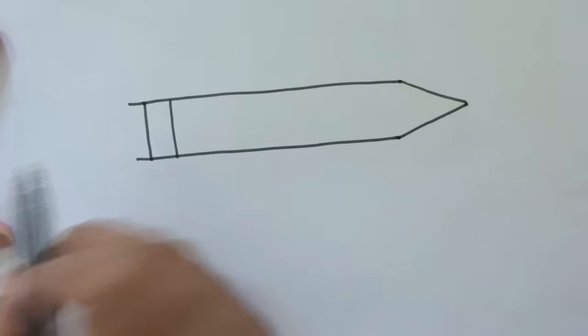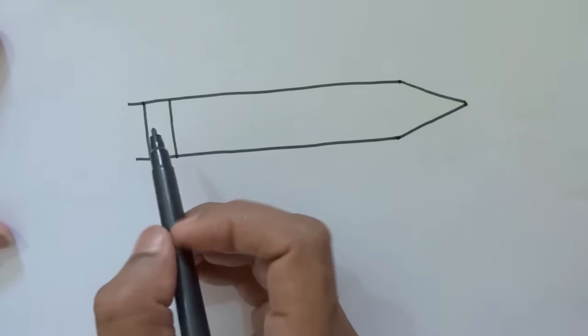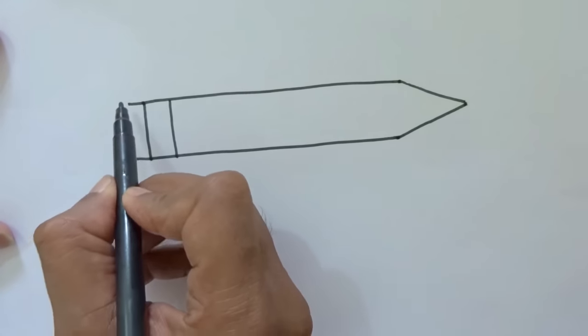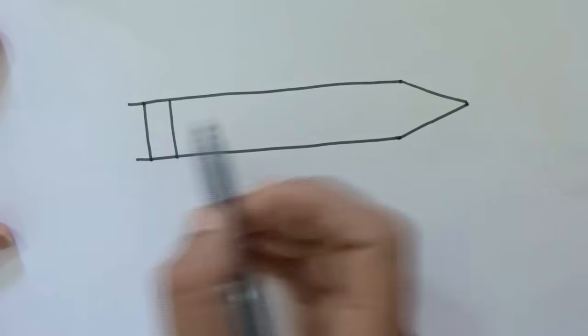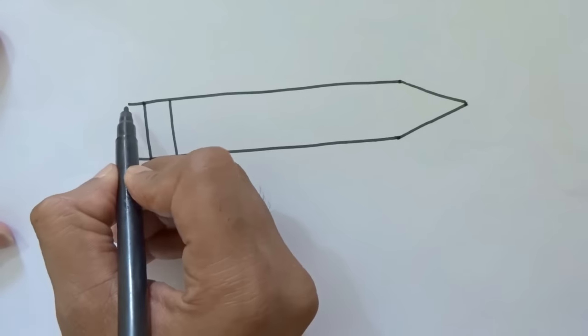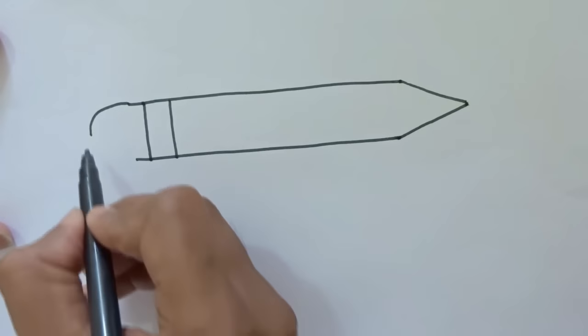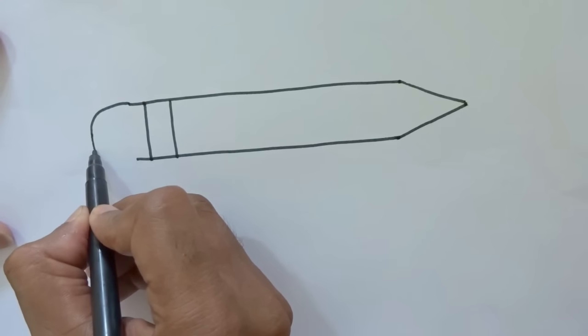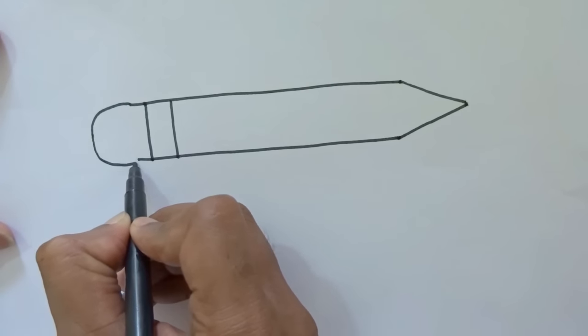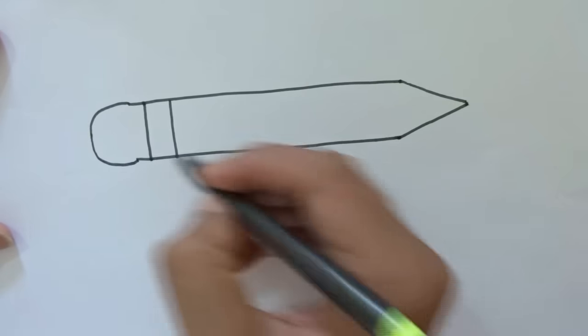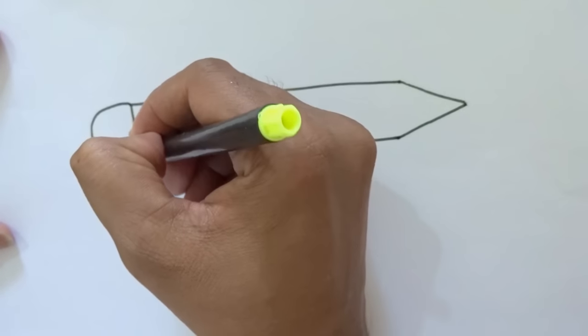Now what we'll do, we'll make its eraser over this part, back part. Like this, like this. Then another line. The curve will come and touch over here. Join it.